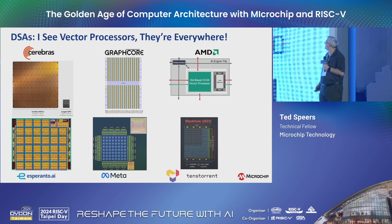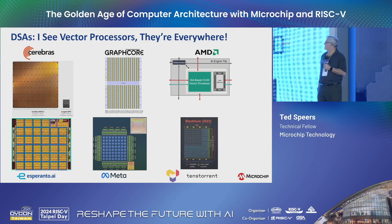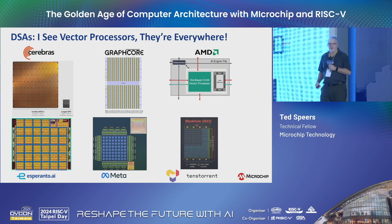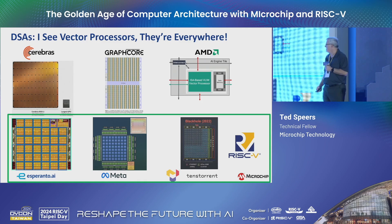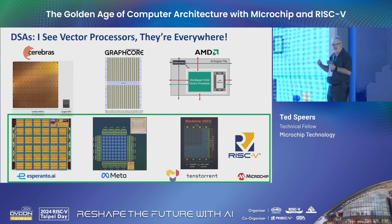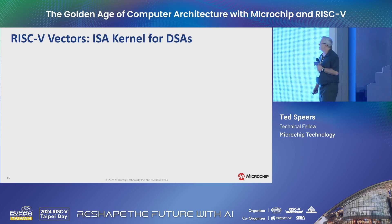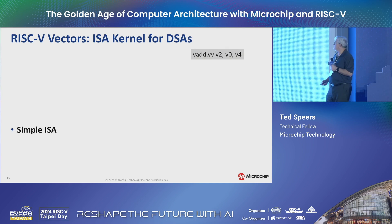What about vectors in this golden age? DSAs are being built — there are a lot of startups building DSAs — and everywhere you look there are vector processors. Cerebras, Graphcore, Xilinx/AMD, Esperanto, Meta, Tenstorrent are all building giant arrays of vector processors. The ones at the bottom here are RISC-V powered DSAs — this is the story we want to continue to write, and we want innovation here to be RISC-V based.